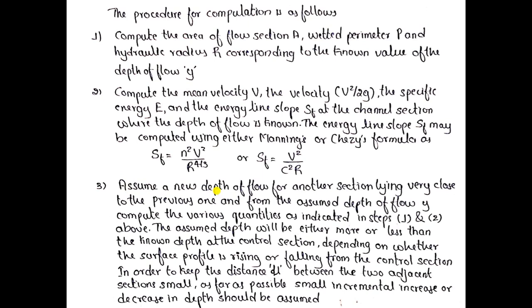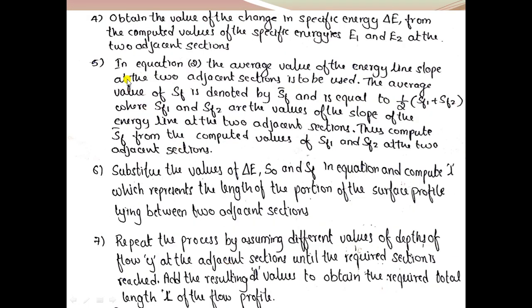After this step, we assume a new depth of flow for another section lying very close to the previous one, and compute the same quantities: area, perimeter, hydraulic radius, velocity, velocity head, specific energy, and slope of energy line. The assumed depth will be more or less than the known depth depending on whether the surface profile is rising or falling. Small incremental changes in depth should be assumed to keep the distance dL small.